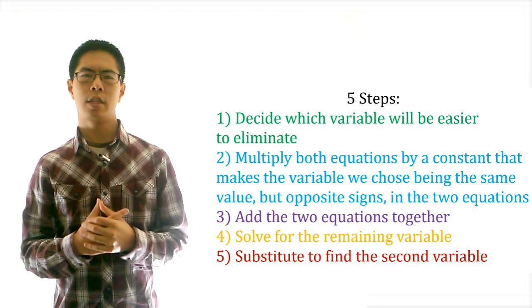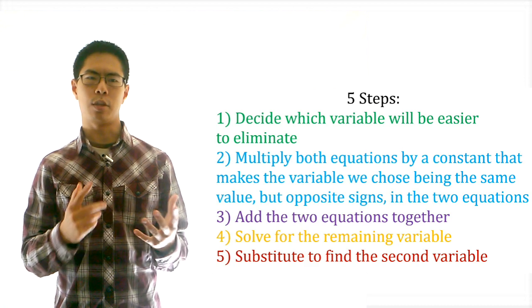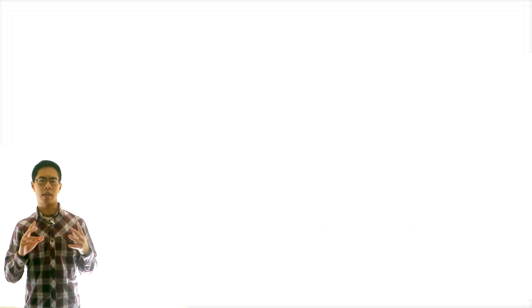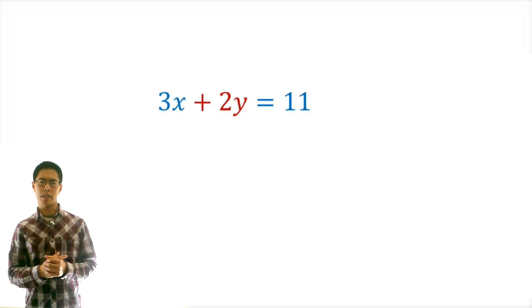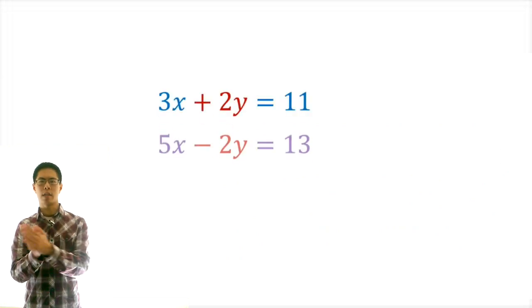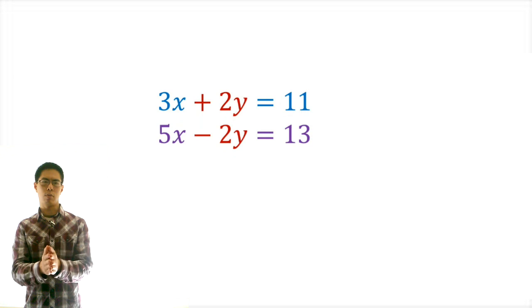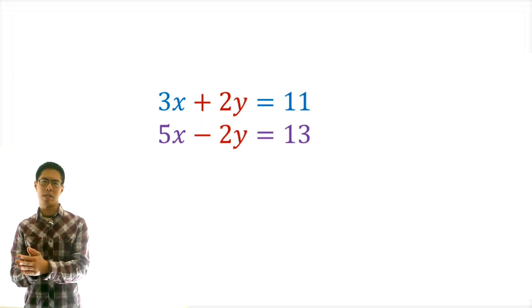Now let's do a simple example together to see how this works. Let's say we have these two equations: 3x plus 2y equals 11, and 5x minus 2y equals 13.